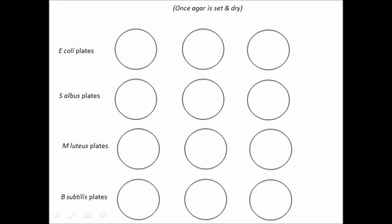Now use the appropriate dispenser to place a disc of your chosen first antibiotic onto one of the three plates for each species. In other words, you'll add a disc to a plate of E. coli, another disc of the same antibiotic to a plate of Staphylococcus albus, and then one each to the remaining two bacterial species. Label the dishes clearly with the name of the antibiotic you've used.